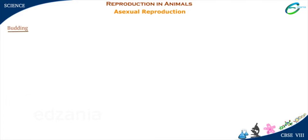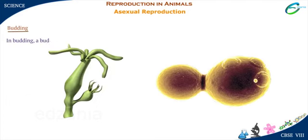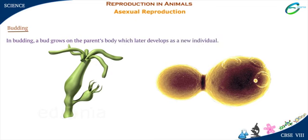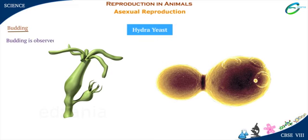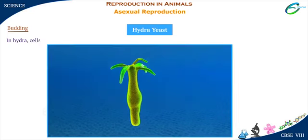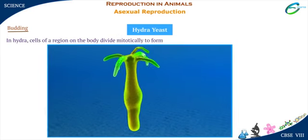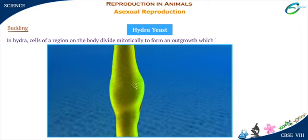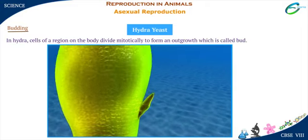In budding, a bud grows on the parent's body, which later develops as a new individual. Budding is observed in hydra and yeast. In hydra, cells of a region on the body divide mitotically to form an outgrowth which is called a bud.